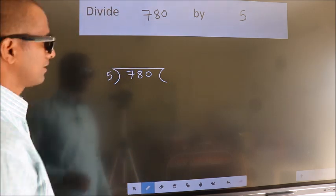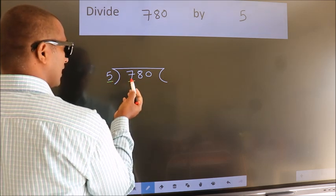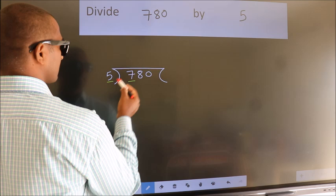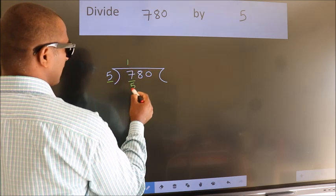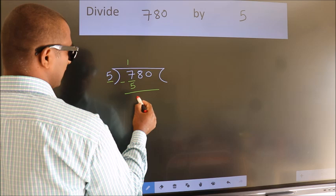Next, here we have 7, here 5. A number close to 7 in the 5 table is 5 once, which is 5. Now we should subtract. We get 2.